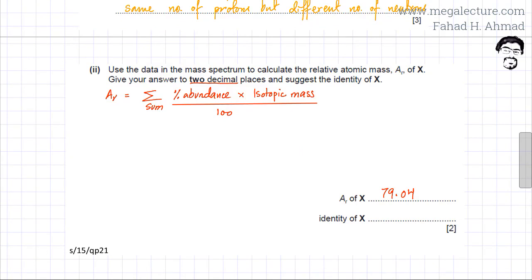And in the next part, the question also wants us to figure out the identity of this element X. If you look at the periodic table, let's round this off, it's close to 79. So the closest element I could come up with in the periodic table is selenium. It's Se.